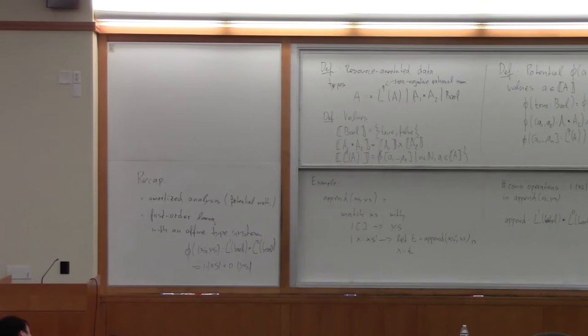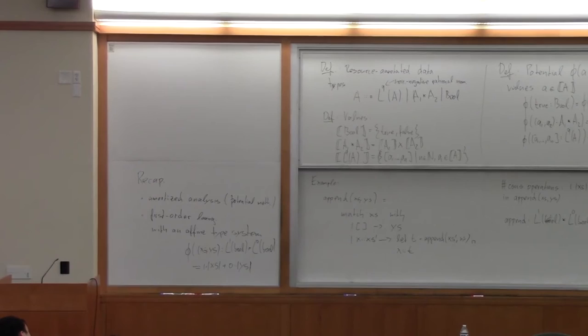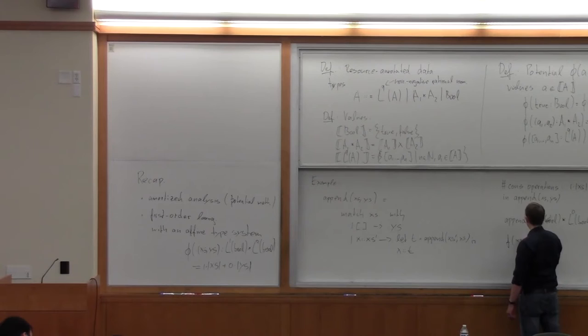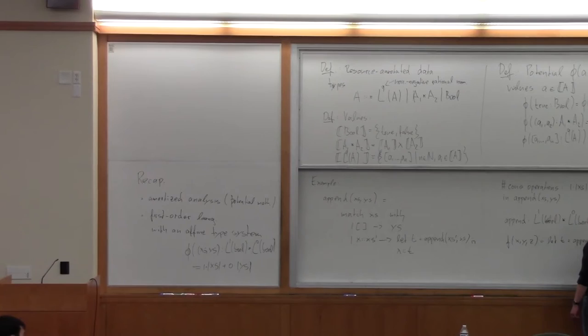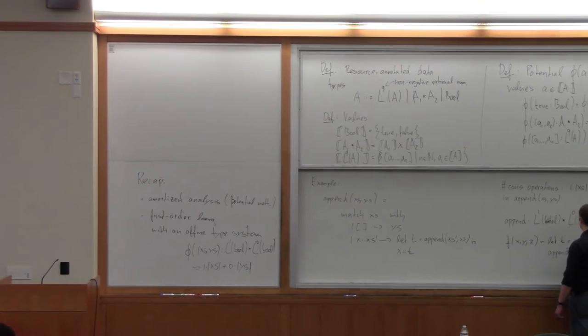We set it up so that the amortized cost is always zero, so the initial potential is always an upper bound — that's what's reflected in this type. This is not the only type we can use for append. Assume we have a program f(x, y, z) where we first append x and y and then append the result to z.